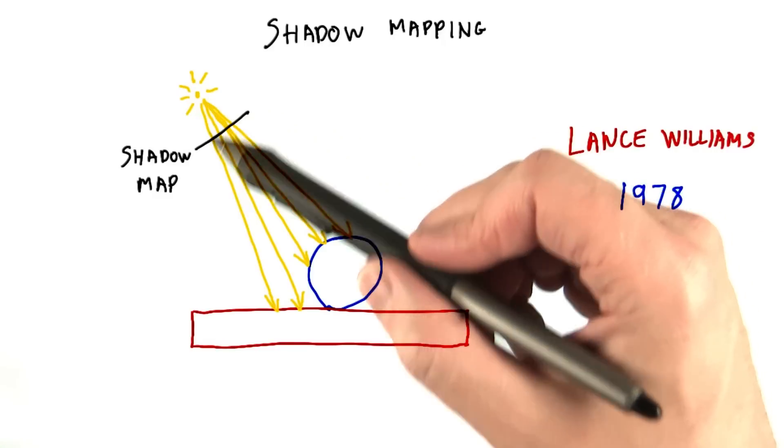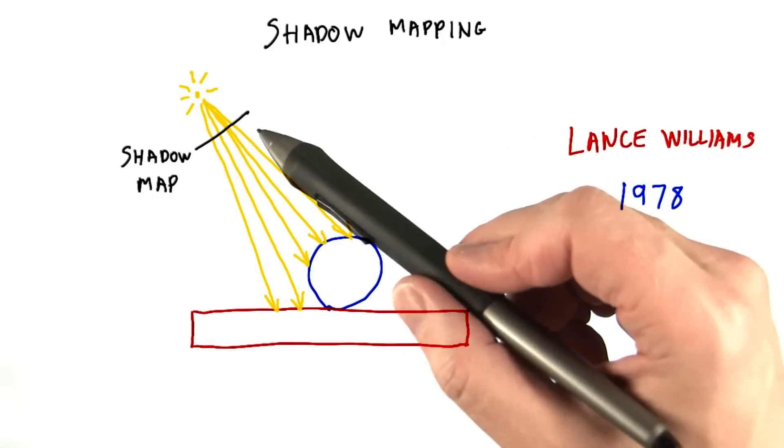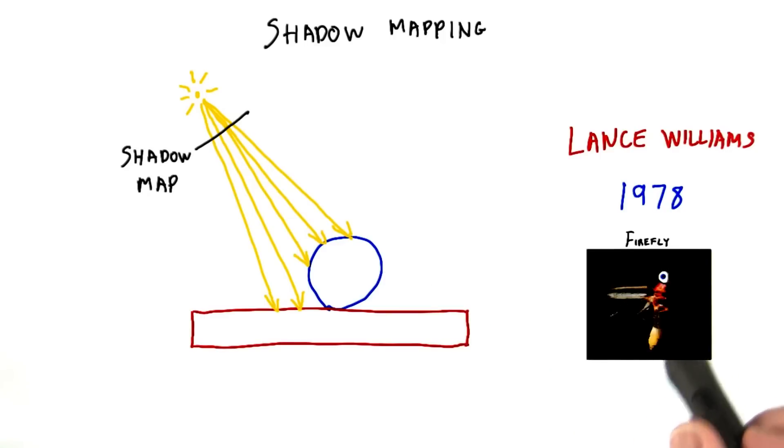The idea is to render the scene from the point of view of the light. Whatever the light sees is what gets lit. Remember our firefly with human eyeballs? This is where that answer comes into play.